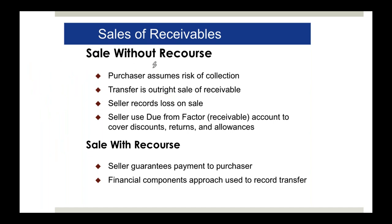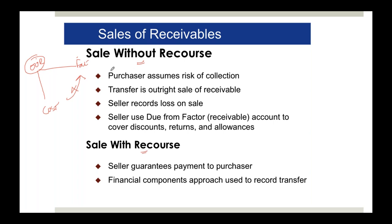In a without-recourse sale, we record: debit cash $95,000, debit disposal charges $5,000, credit accounts receivable $100,000 - the full amount is cleared from our books. We can completely forget the receivable because it is without recourse. If the customer doesn't pay the factor, we have no liability.